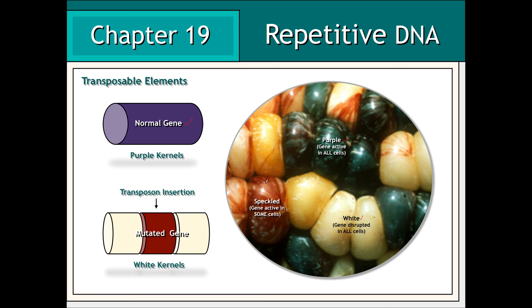In these particular speckled kernels, only some cells maintained the normal gene producing purple pigment, whereas the other cells had this gene interrupted by the insertion of a transposon. Thus, we have further illustration that transposable elements can alter or silence the expression of genes.